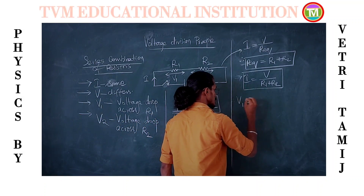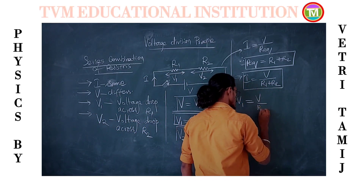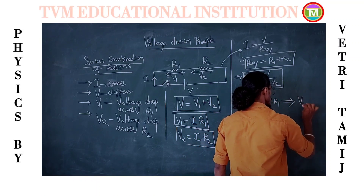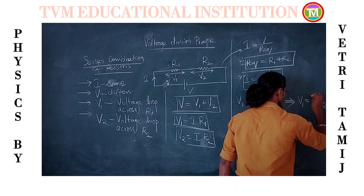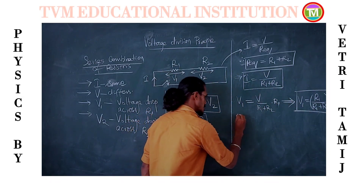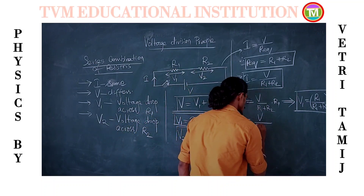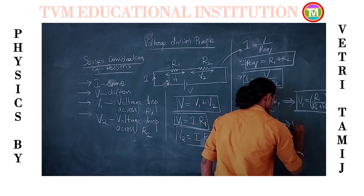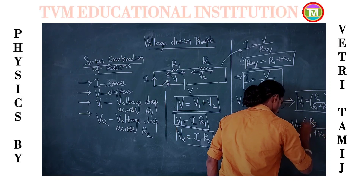Therefore, V1 is equal to — substituting I — it is R1 divided by (R1 plus R2), the whole bracket times V. So V2 is equal to V divided by (R1 plus R2) times R2, which gives R2 divided by (R1 plus R2), whole bracket times V.